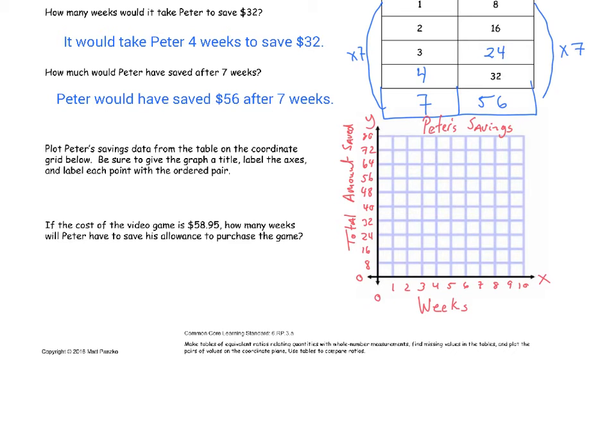So let's go ahead and start plotting some of these points. I know that Peter saved $8 after one week. That would just be (1,8). After two weeks, he saved $16. (2,16). After three weeks, $24. After four weeks, Peter saved $32.